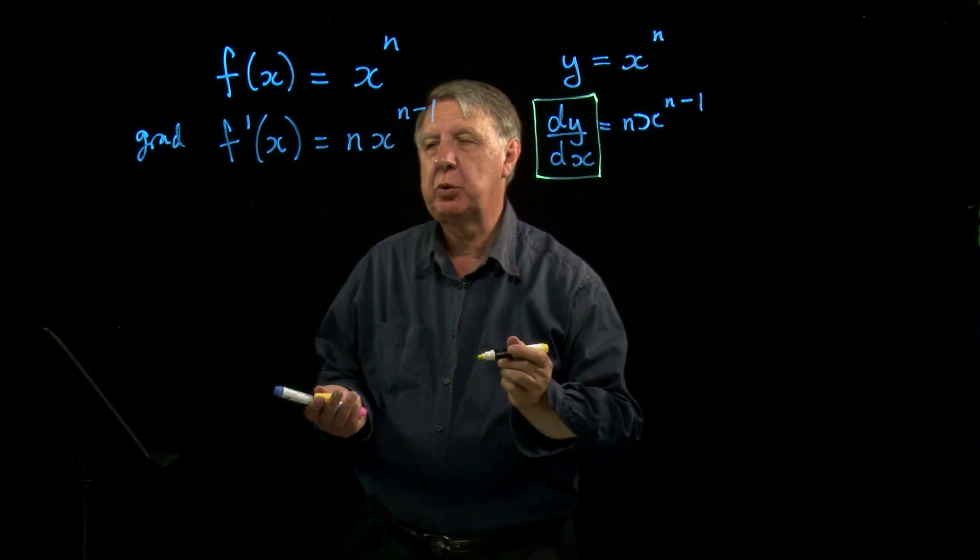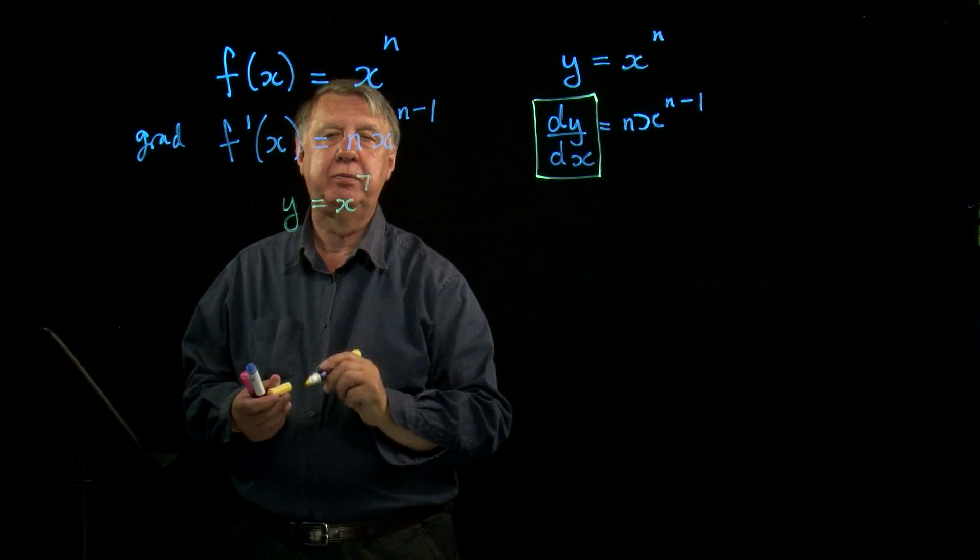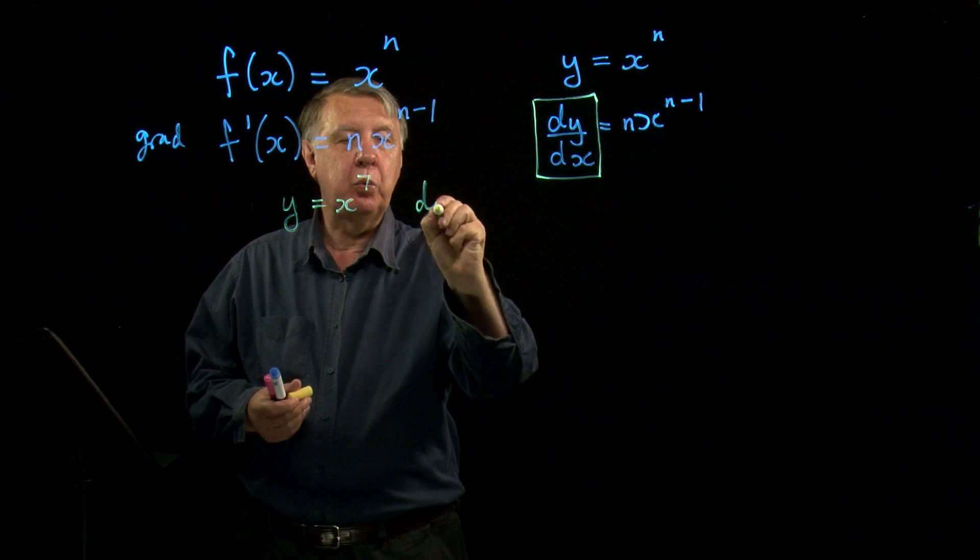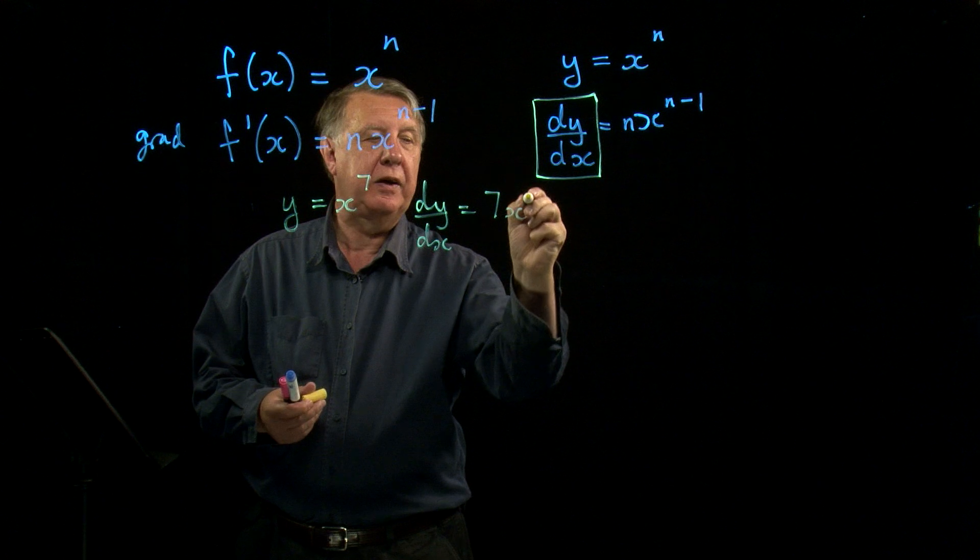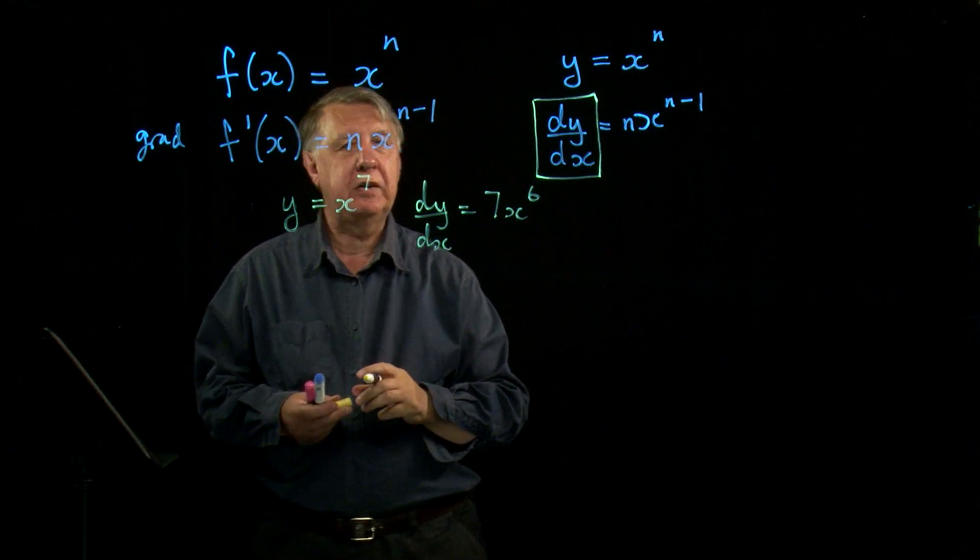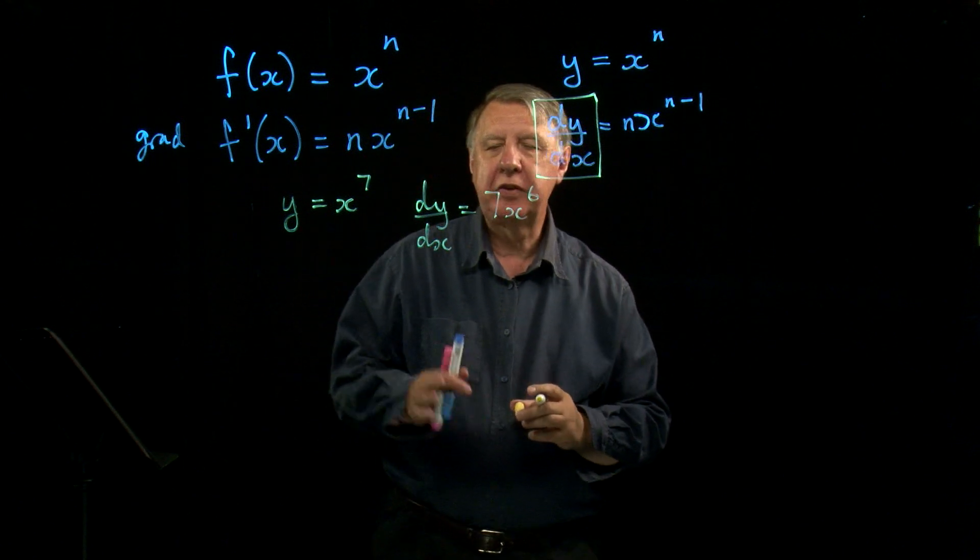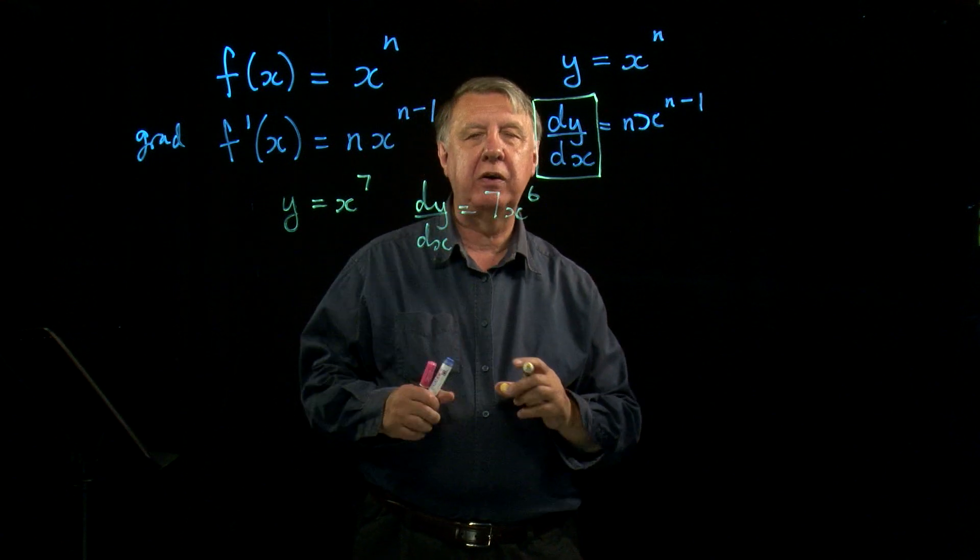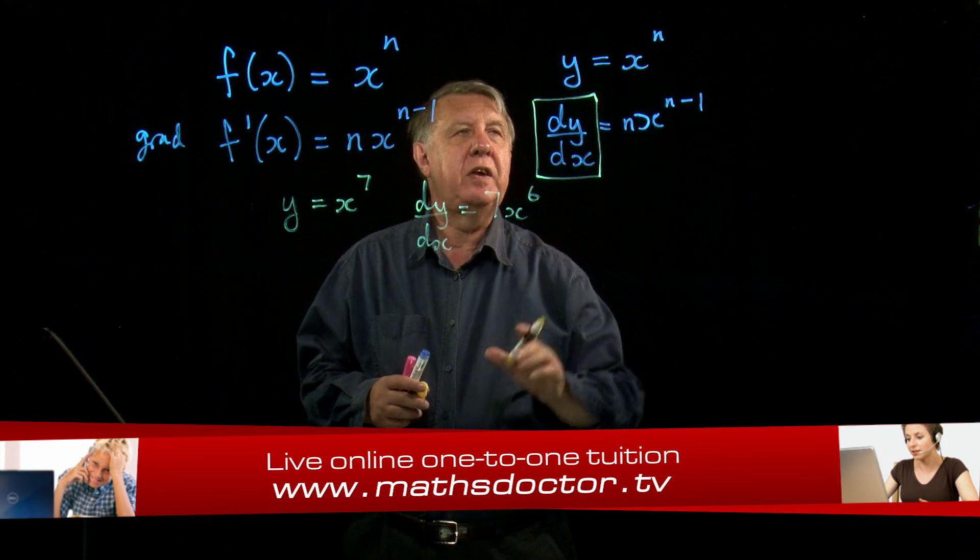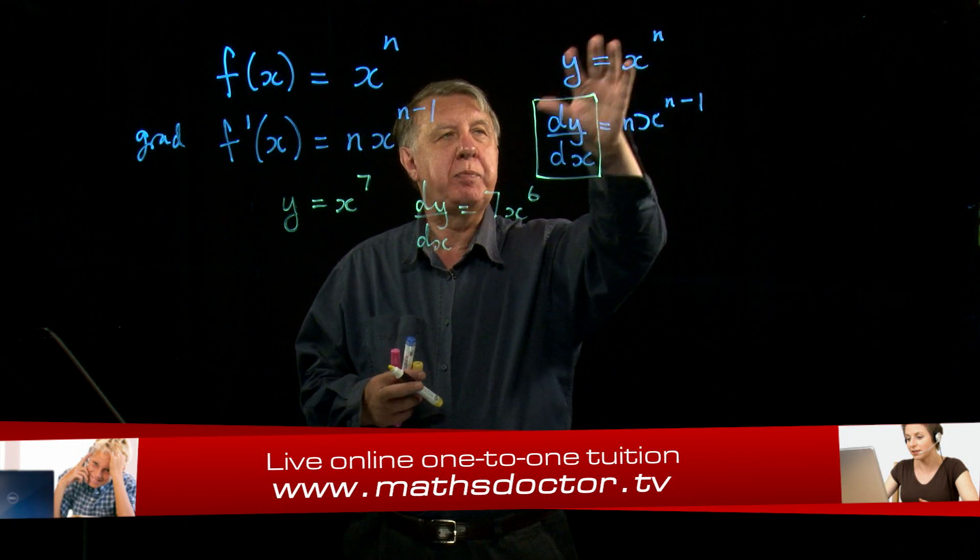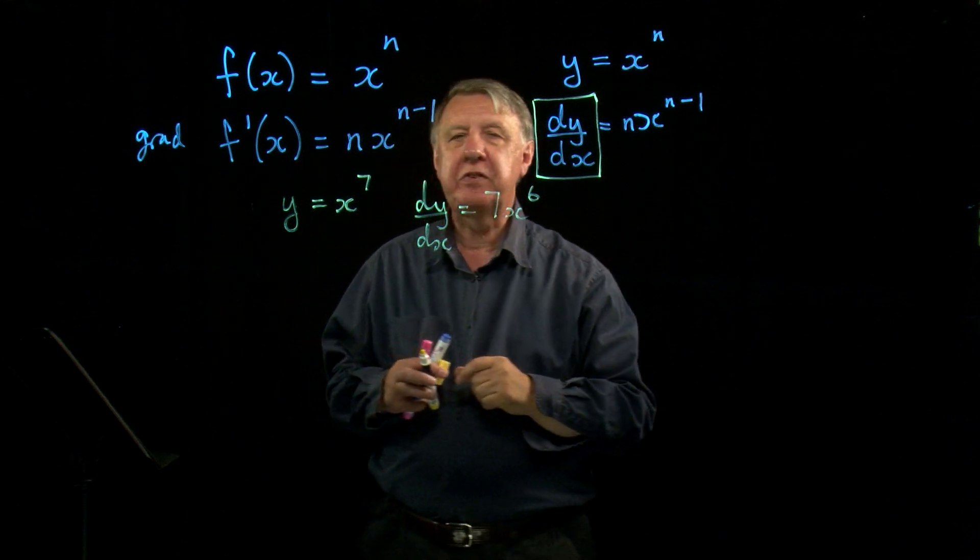And the whole symbol means differentiate. It's the result of differentiating, finding the gradient function of x to the power n. So if we have a simple numerical example, if y was equal to x to the 7, then dy by dx, the gradient function, is 7x to the power 6. It's as easy as that to use.